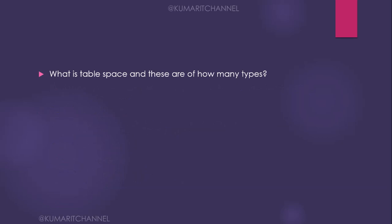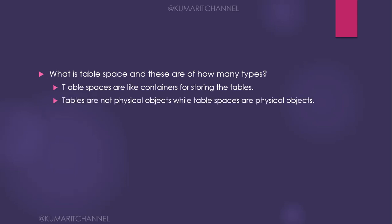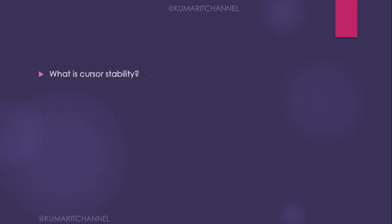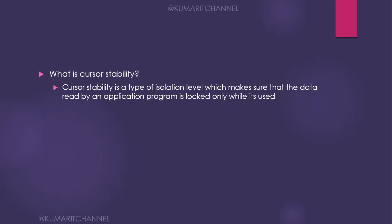What is a table space and how many types are there? Table spaces are containers for storing tables. Tables are not physical objects — table spaces are the physical objects. There are three types of table space: simple, segmented, and partitioned.